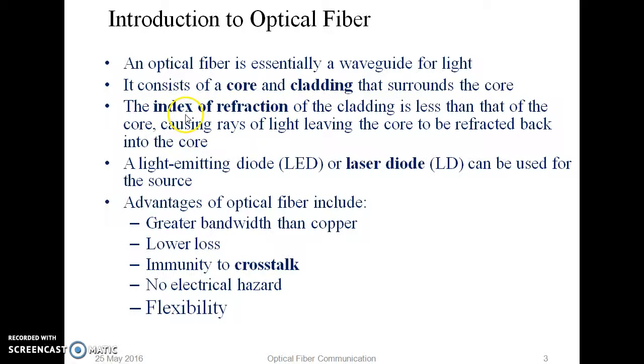The cladding ensures that the light passing through the core cannot leave the core. The important characteristic of this core and cladding material is the index of refraction. The refractive index N1, that is the core, should always be higher than the refractive index of cladding, that is N2. Here, we are going to see what are the sources used.